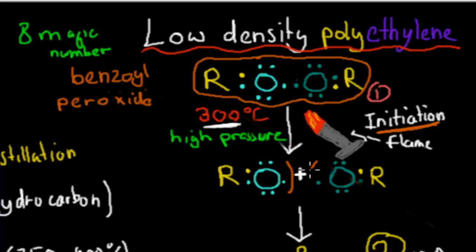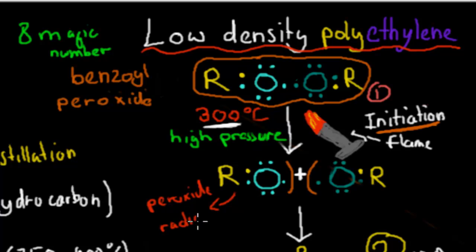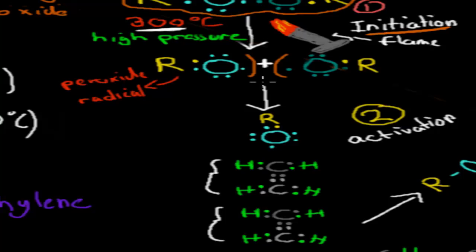The high pressure and temperature actually splits the benzoyl peroxide apart. The two halves are now called peroxide radicals. The reason they're called radicals is because they're missing an electron — they only have seven instead of the magic number of eight. So we've made them unhappy because they only want eight electrons.